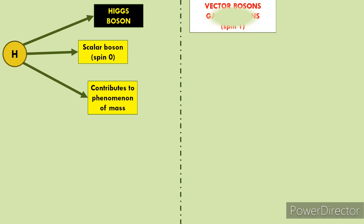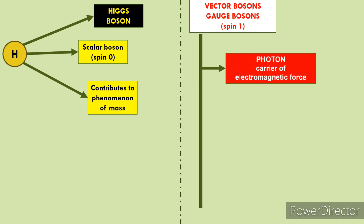Jo second category hai bosons ki, unko vector bosons ya gauge bosons kehte hain, aur un sabhi bosons ka spin 1 hota hai. Inme pehla hai photon. Photon electromagnetic force ka carrier particle hai. Iska symbol gamma hai — photon ko gamma se represent karte hain. Electromagnetic force ka carrier hai, jaise light, jo ki ek electromagnetic wave hai. Toh photon light ka particle hai, isliye it is the particle carrier of force.